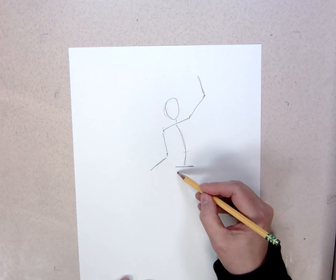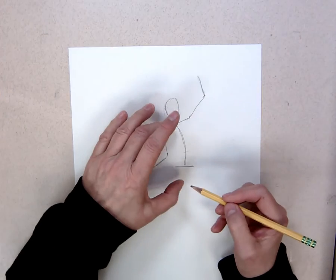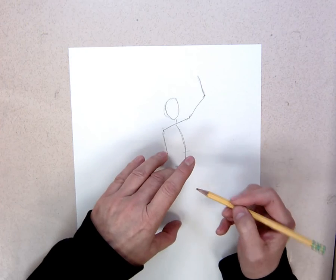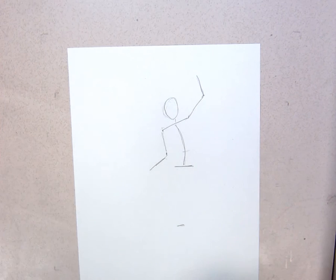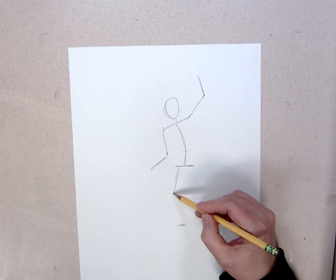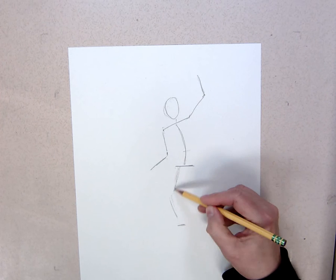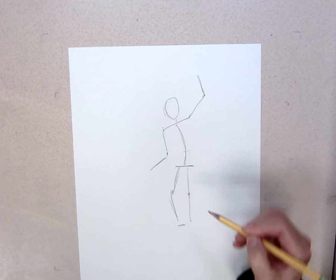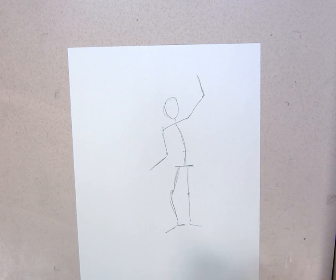And then legs. I know that from here to here is going to equal the same distance to the bottom of the feet. So the feet are going to be down there. I just kind of roughly map in to the knee. I don't put the legs way out here.